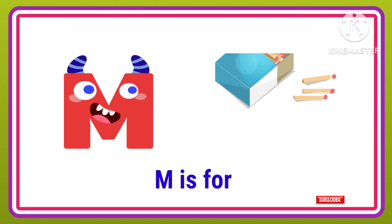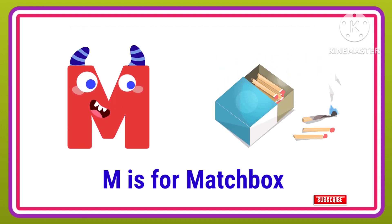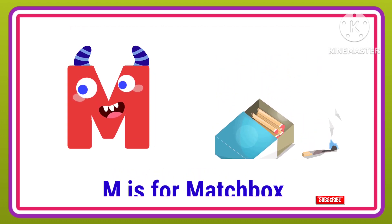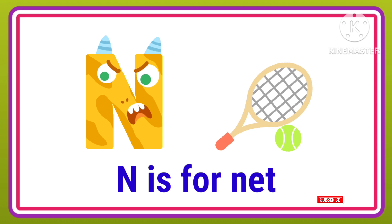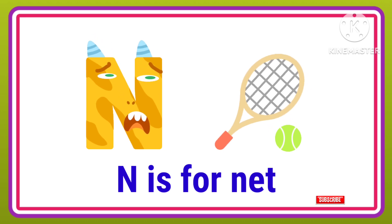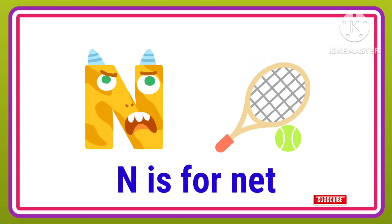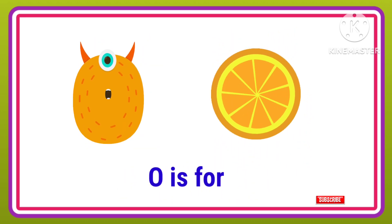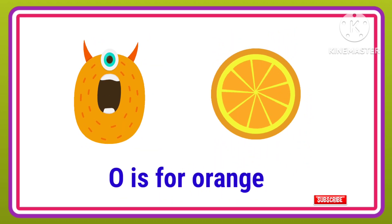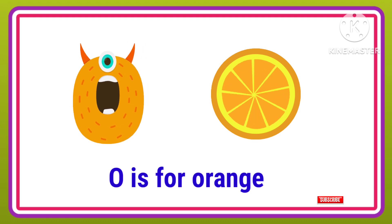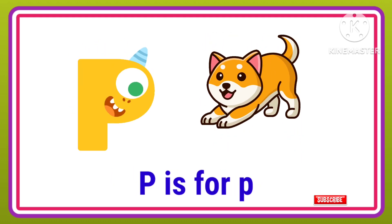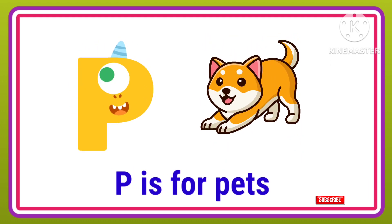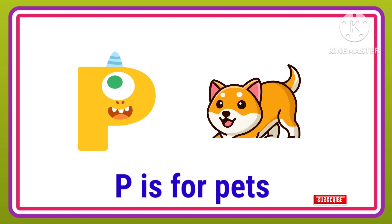M is for Mat, M-M-Mat. N is for Net, N-N-Net. O is for Orange, O-O-Orange. P is for Pet, P-P-Pet.